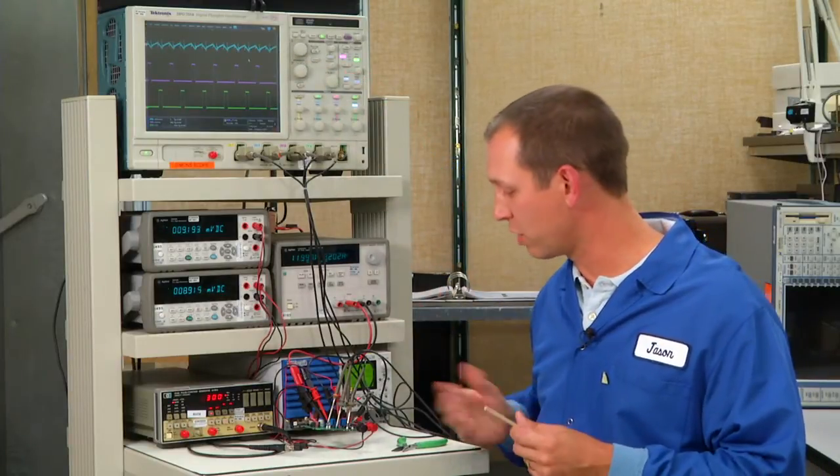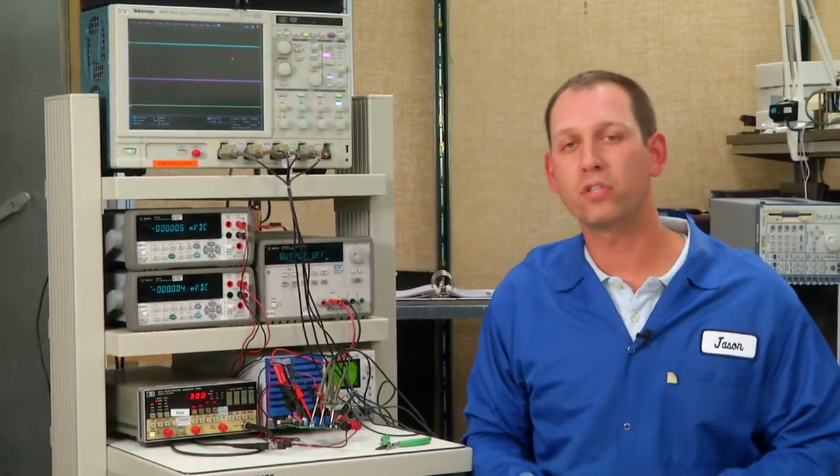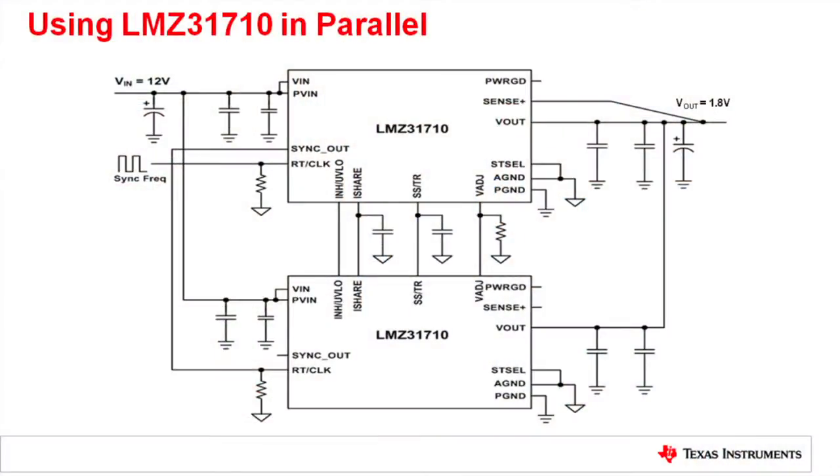The other feature we're going to demonstrate is the parallel ability of the LMZ31710. The LMZ31710 can be paralleled up to 60 amps of output current. This here is a schematic of the LMZ31710 in parallel. This is very similar to the board I have demonstrated here, and I'll be demonstrating this setup in a bit.